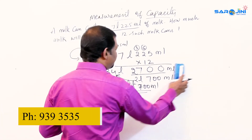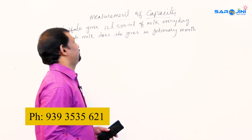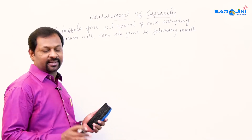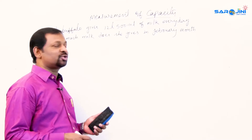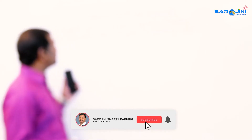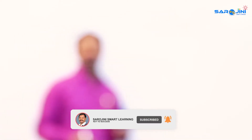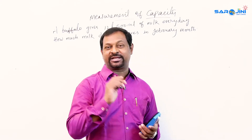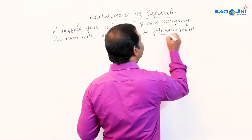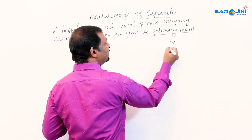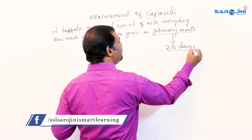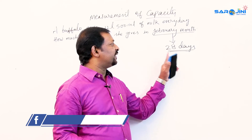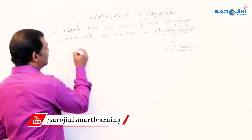Here is one more example. A buffalo gives 12 liters 500 milliliters of milk every day. How much milk does she give in the month of February? Now, months can have 30, 31, 28, or 29 days. February has 28 days; on a leap year it has 29 days. We will explore leap years separately — they come every four years.